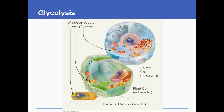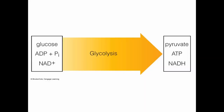Glycolysis is the only source of energy for erythrocytes. This diagram represents that the process of glycolysis occurs in the cytoplasm in eukaryotic cells and similarly also in prokaryotic cells. In aerobic oxidation, the end product of glucose is pyruvate. Here, glucose is a six-carbon molecule, and at the end of this reaction it is converted to a three-carbon compound, that is pyruvate.